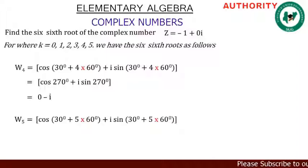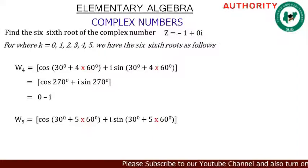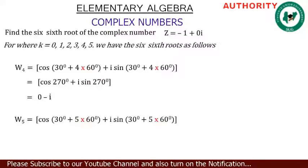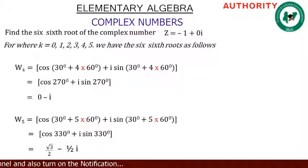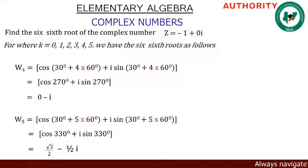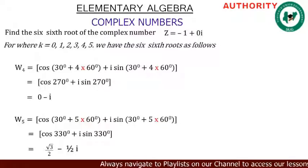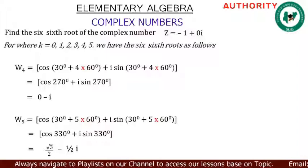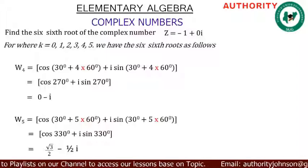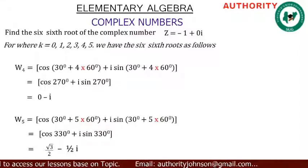For k = 5: w₅ = cos(30 + 5·60°) + i·sin(30 + 5·60°). Five times 60 = 300, and 300 + 30 = 330°. cos(330°) = √3/2, and sin(330°) = -1/2, so -1/2 times i = -1/2·i. Therefore w₅ = √3/2 - 1/2·i. These are all six sixth roots of the complex number.